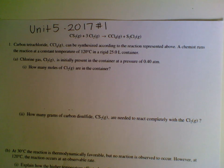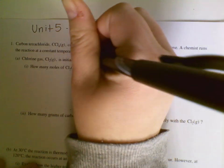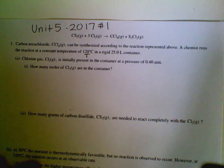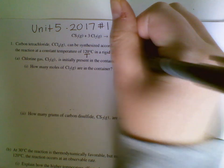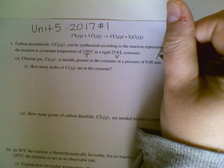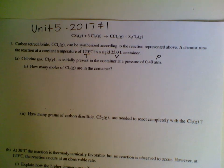If we look at A, it says chlorine gas is initially present in the container at 0.4 ATMs. How many moles of Cl2 are in the container? And I am correct. We have T, we have V, and we have P here in our problem.